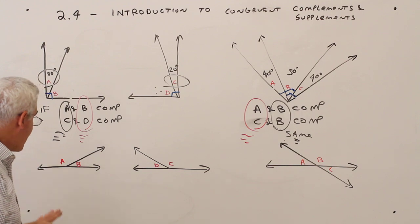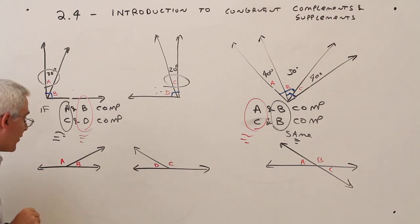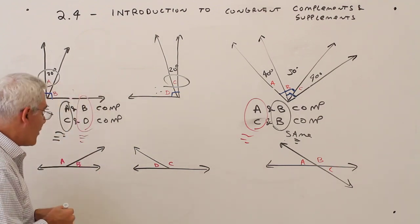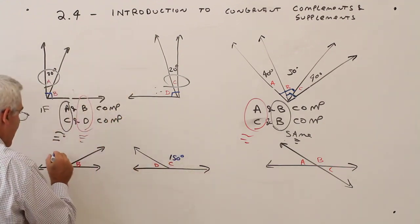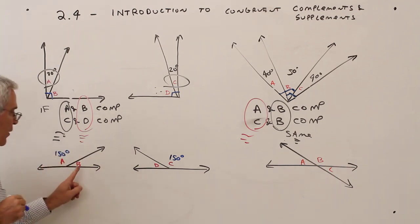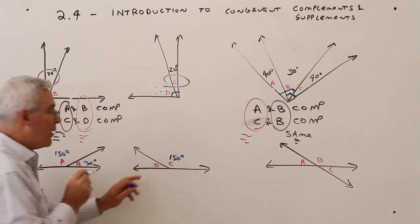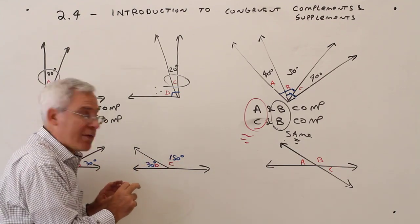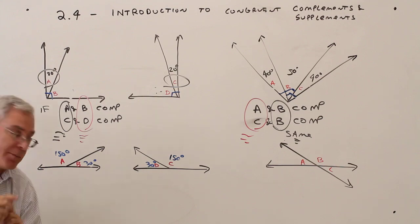Now let's lay the groundwork for supplementary. I've got a straight line, so angles A and B are supplementary. I've got another straight line, so angles C and D are also supplementary. Let's suppose A is 150 degrees and C is also 150 degrees. Then the measure of B would be 30, and the measure of D would also be 30.